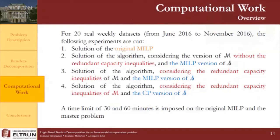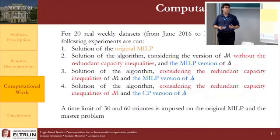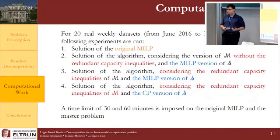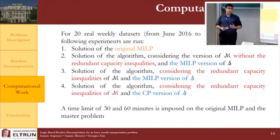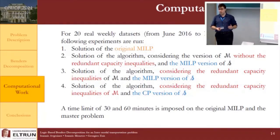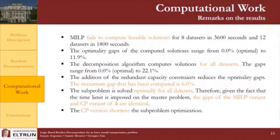To establish efficiency, we run four experiments on 20 real weekly datasets provided by the logistics company, dating from June to November 2016. Experiment 1 solves the original MILP. Experiment 2 solves the decomposition algorithm without redundant capacity constraints using the original MILP sub-problem. Experiment 3 adds the redundant capacity constraints to the master problem. Experiment 4 replaces the MILP sub-problem formulation with the constraint programming one. A time limit of 30 and 60 minutes is imposed on the original MILP for experiment 1, and on the master problem for experiments 2, 3, and 4.